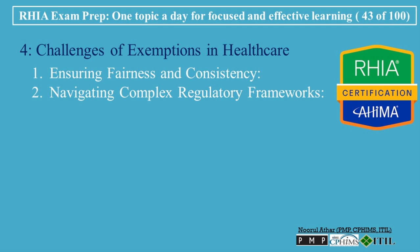Simplifying exemption processes and providing clear guidance can help alleviate this issue. Potential for Misuse: Exemptions can sometimes be misused, particularly if individuals or organizations seek exemptions for reasons unrelated to the intended purpose. For example, some may apply for exemptions to avoid regulatory requirements without valid justification. Healthcare organizations must have rigorous processes for evaluating exemption requests to prevent misuse.